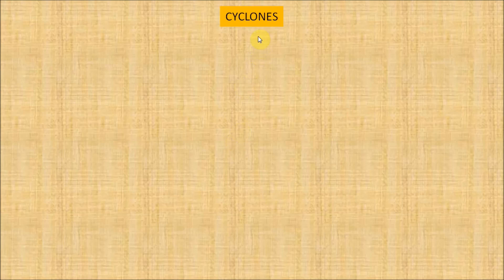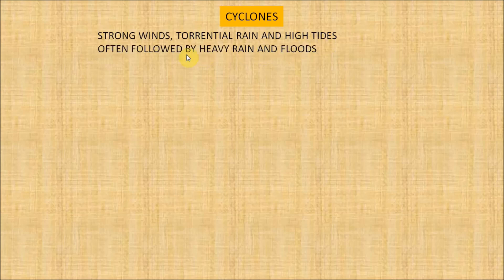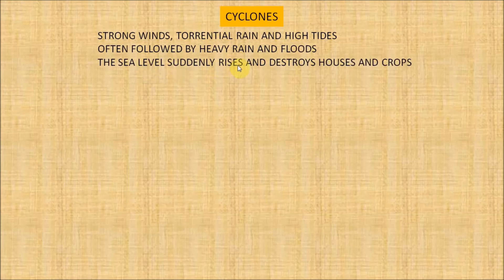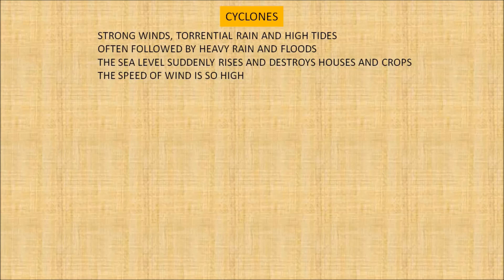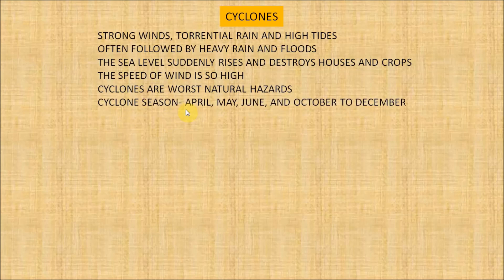Now let's see cyclones. Cyclones are accompanied by storm winds, torrential rain and high storm tides, often followed by heavy rain and floods. The sea level suddenly rises and destroys houses and crops in coastal areas. The speed of wind is so high that it uproots trees, electric poles and whatever comes in its way. Cyclones are the worst natural hazards affecting people living in coastal areas, and they occur especially in the months of April, May, June and October to December.